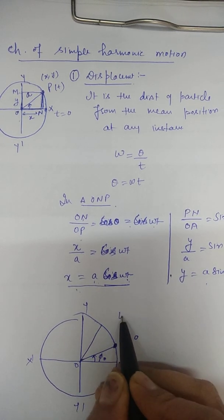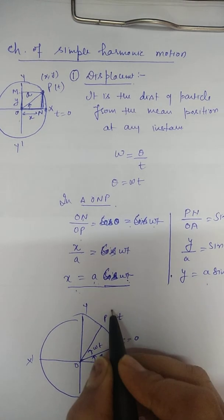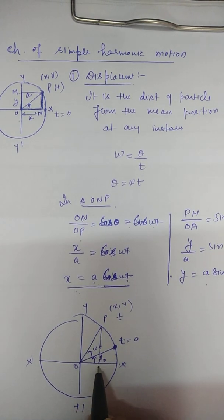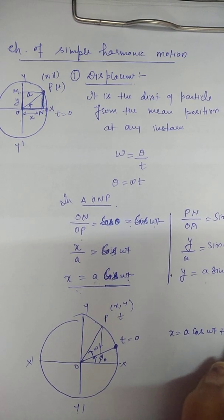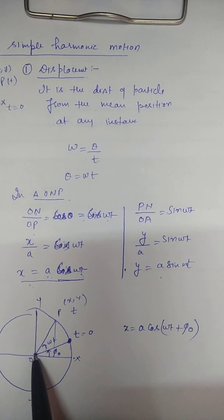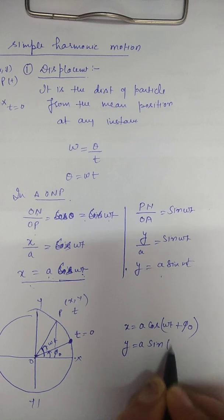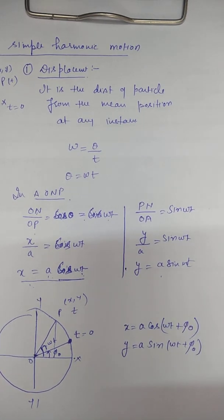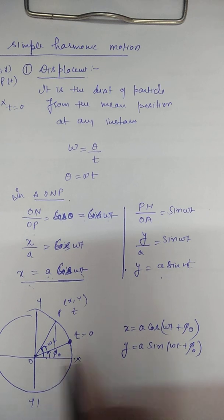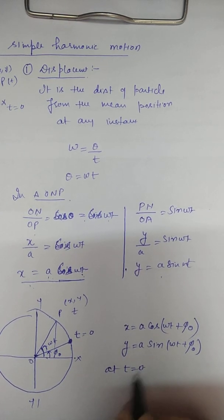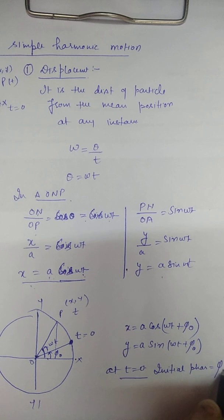After time t, the particle reaches point p. The angle covered in time interval t is omega into t. The total angle made with the x-axis is omega t plus phi naught. So x equals A cos(ωt + φ₀) and y equals A sin(ωt + φ₀). Here, phi naught is the initial phase at time t equal to 0.